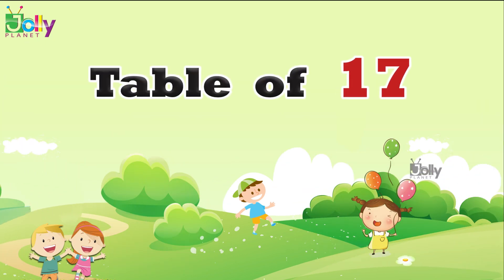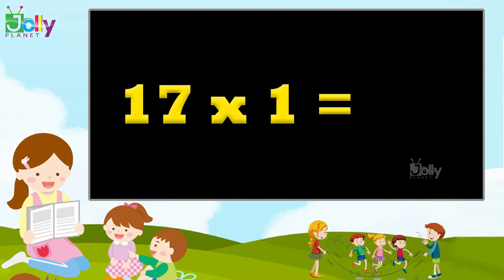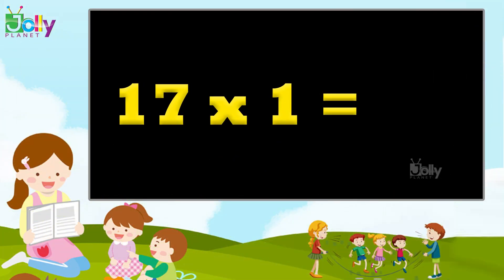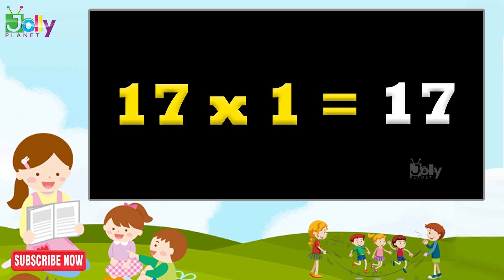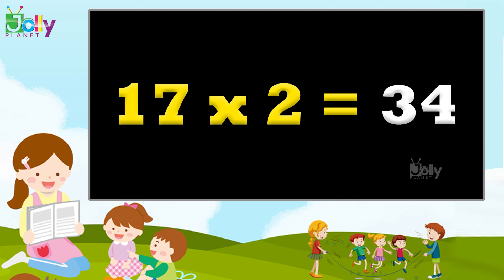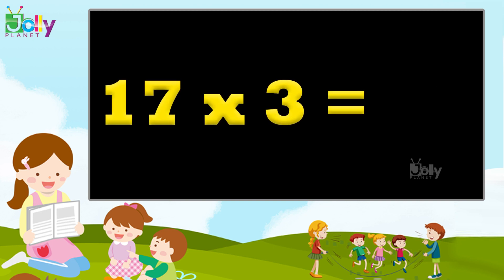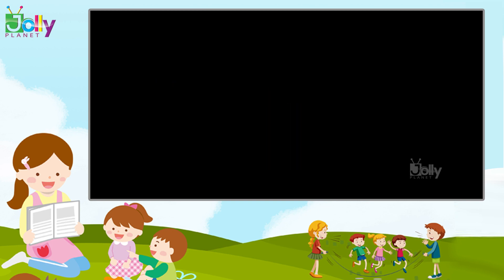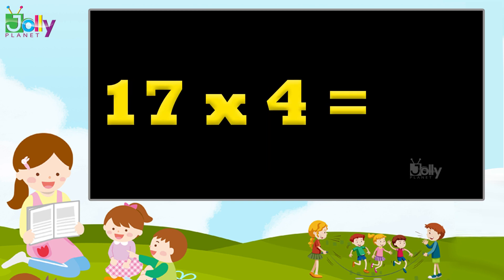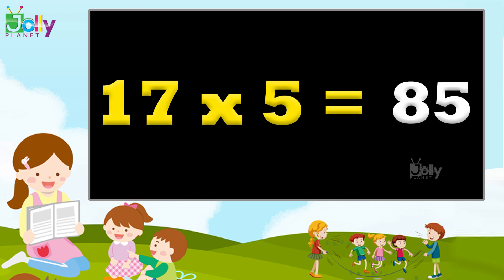Table of 17: 17 ones are 17, 17 twos are 34, 17 threes are 51, 17 fours are 68, 17 fives are 85.